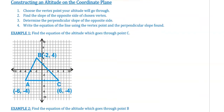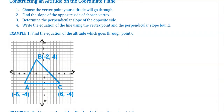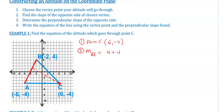Let's use those steps for example one. We want to create an altitude going through point C — there's point C, there's side AB the opposite side. We want to find the equation of that dotted line. Step 1 is to identify the vertex — in this case point C is (6, −4). Step 2, we want to find the slope of the opposite side, which is segment AB, using our slope formula.